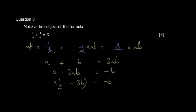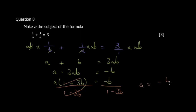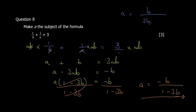Dividing both sides by (1 − 3b), we get a = −b / (1 − 3b). This is one acceptable answer. An equivalent form is a = b / (3b − 1), obtained by multiplying numerator and denominator by −1.